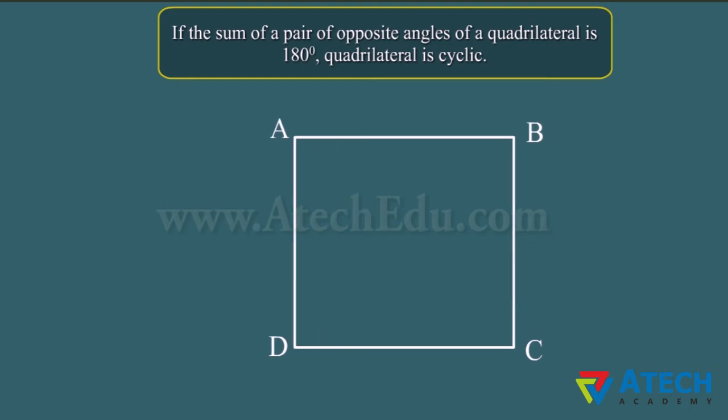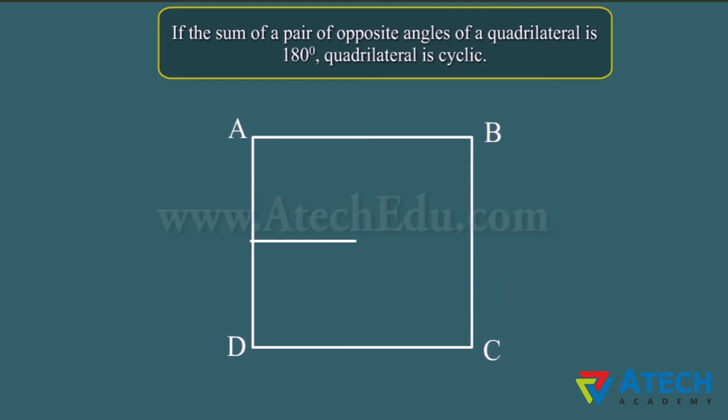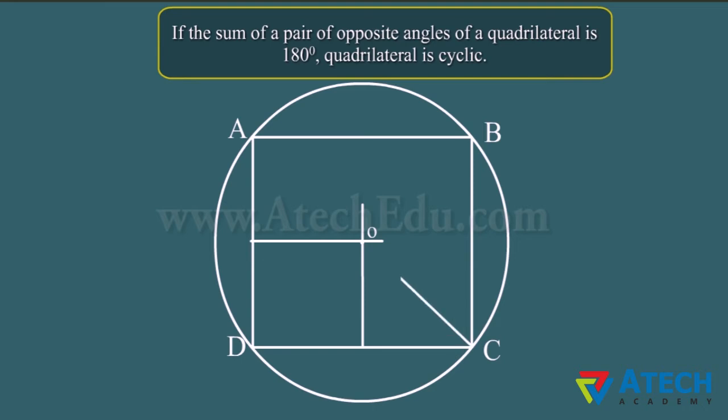Let us draw perpendicular bisectors of two adjacent sides, such that they intersect at O. O forms the center of the circle. The circle can be drawn from the center O. The circle passes through points A, B, C and D. Thus, the square ABCD is cyclic.